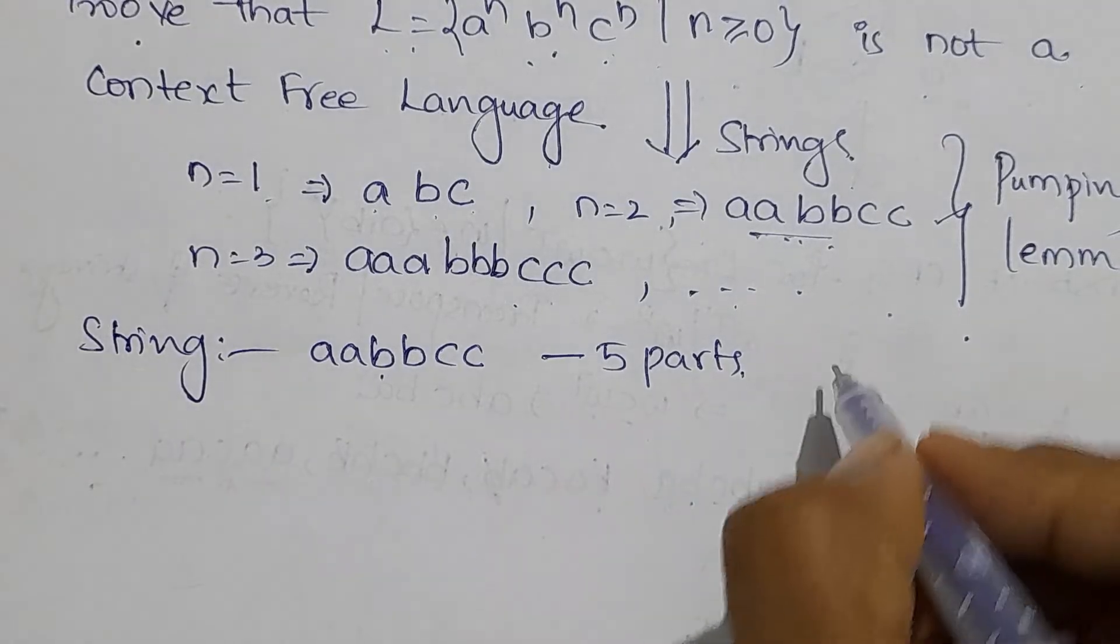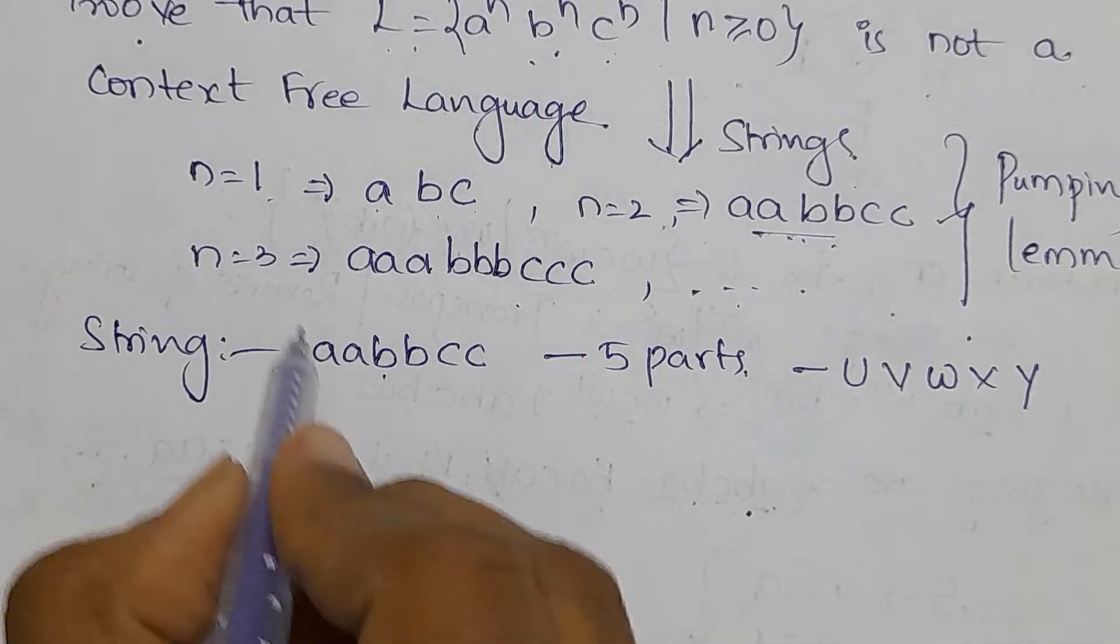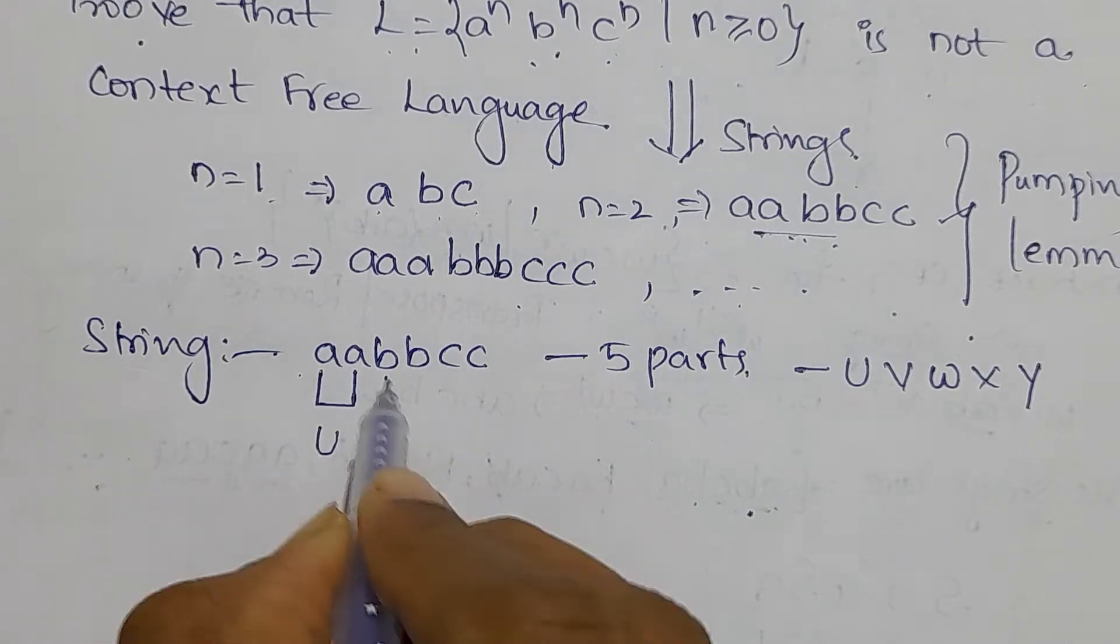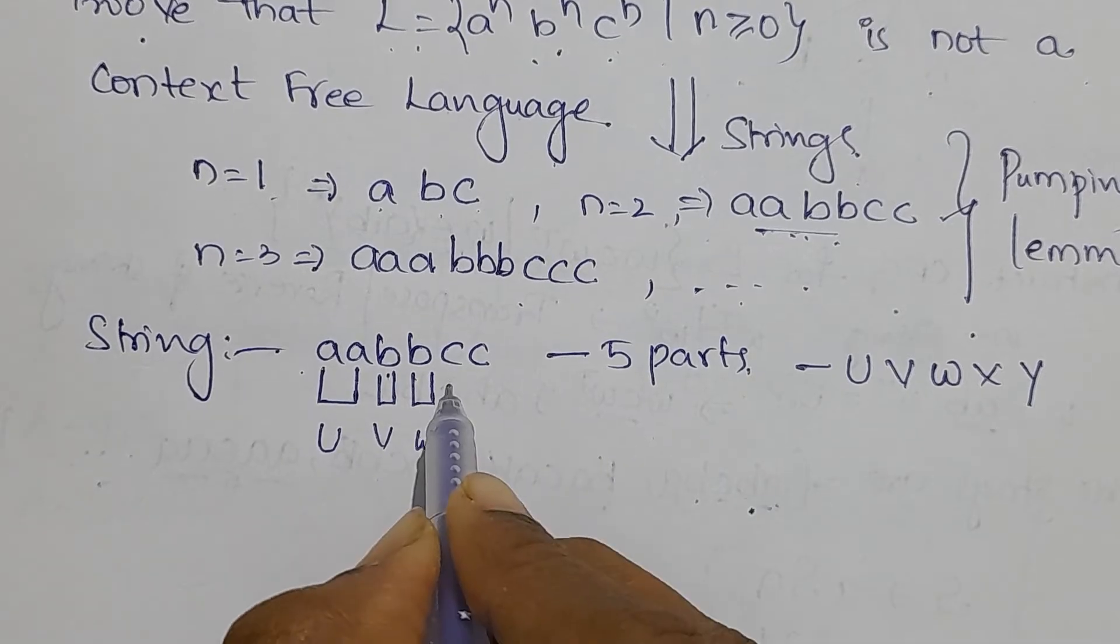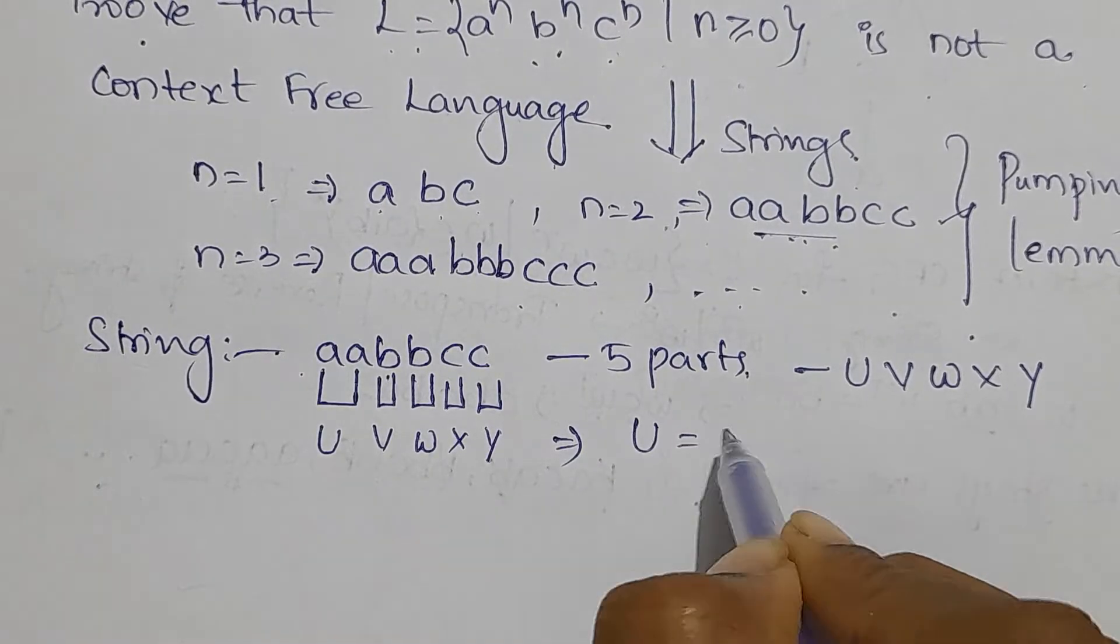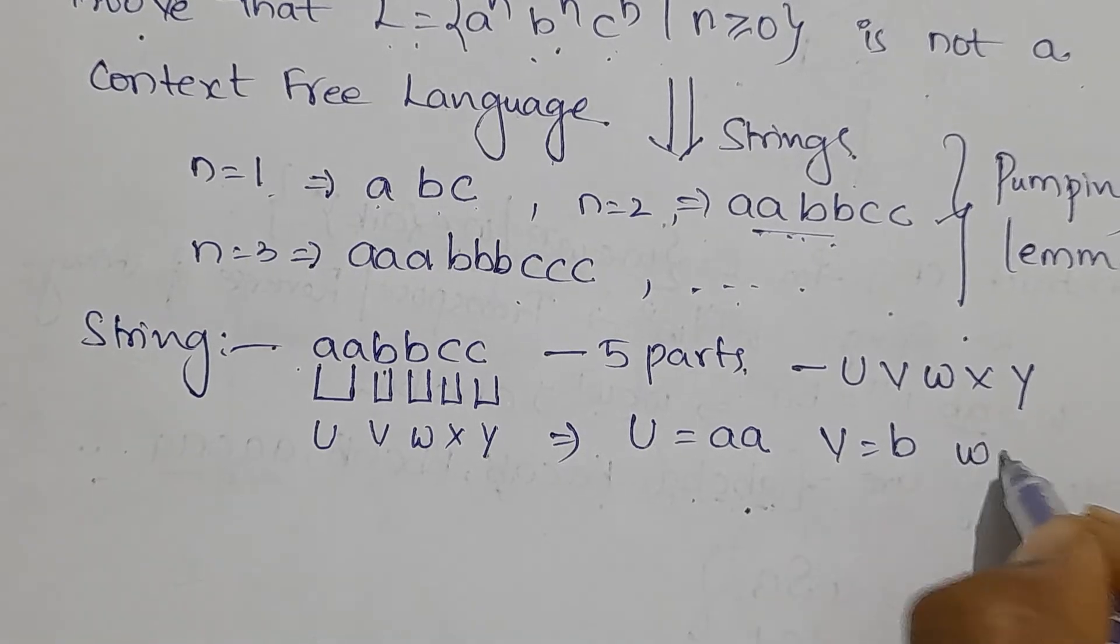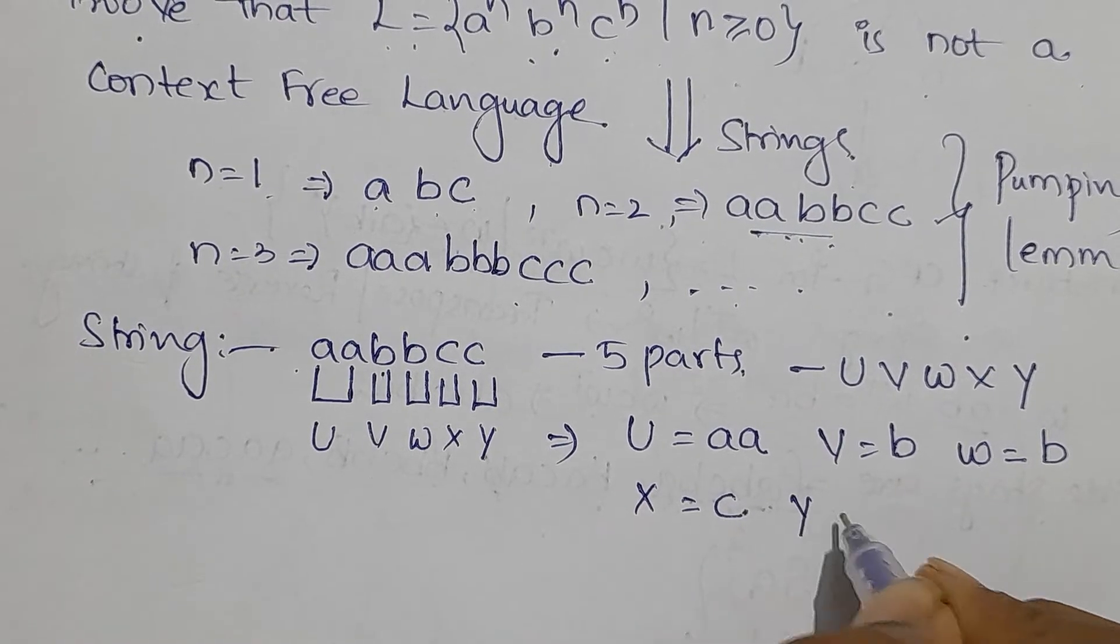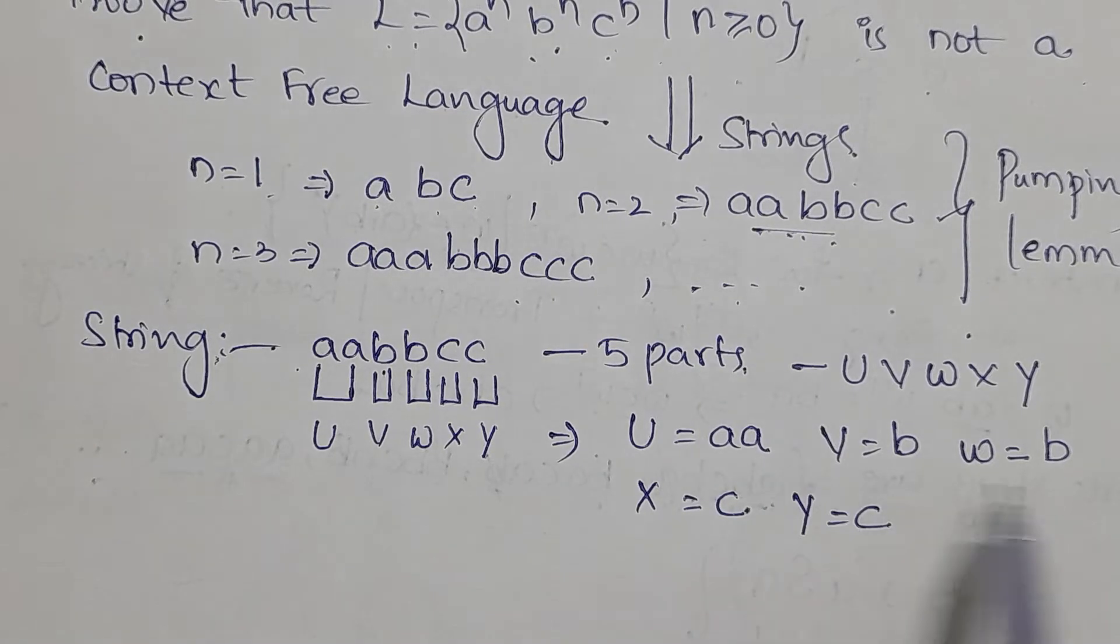I am assuming that U equals aa, V equals b, W equals b, X equals c, and Y equals c. We have divided the considered string into 5 parts.